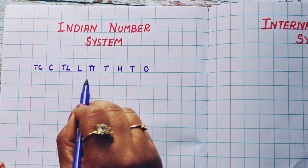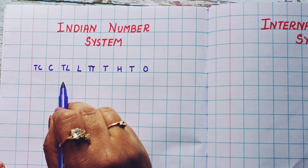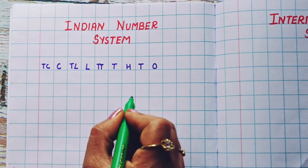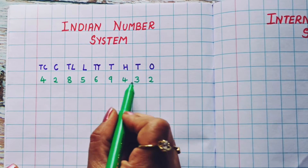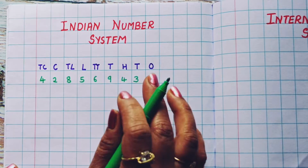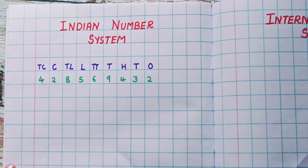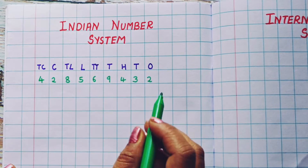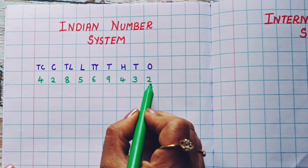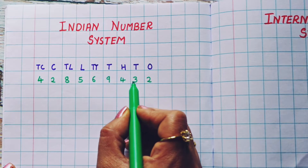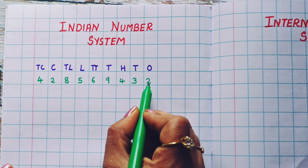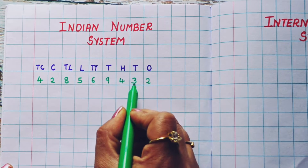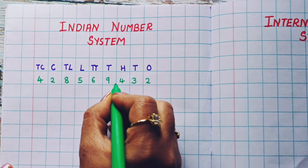In the Indian number system, this is the way we write the places of numbers. Now, to understand this, let us take one example. To read this number, first we are going to give the commas. The first comma we are going to give after the hundreds place — ones, tens, and hundreds — so here I am going to give the first comma.